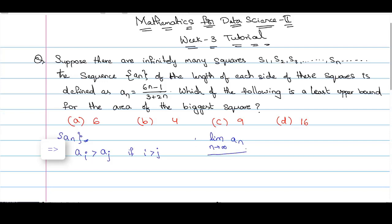So, let us compute the limit value of an. This will be limit n tends to infinity, 6n minus 1 by 3 plus 2n. I can take n common from numerator and denominator. I will get 2 plus 3 by n. So, n, n gets cancelled.